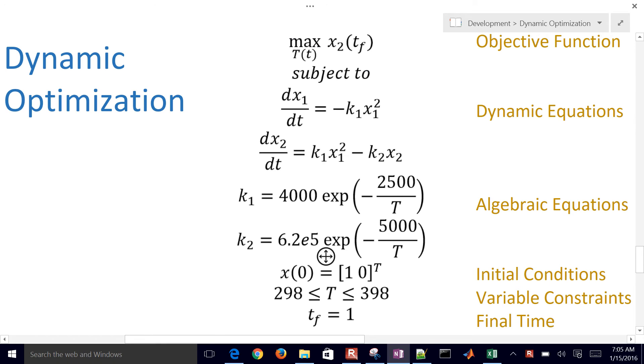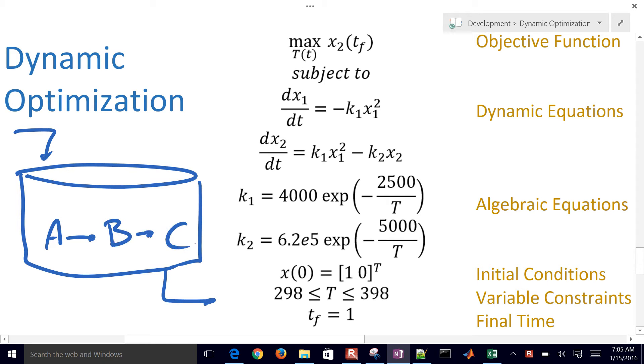This is a reactor, in this case just a continuously stirred reactor where we have reactants coming in and then leaving. And then you have A goes to B goes to C with a reaction rate of K1 times X1 squared, and that would be the concentration of A. And then we have K2 times X2 squared, and that would be the concentration of B squared times K2. So these are the reaction rates.